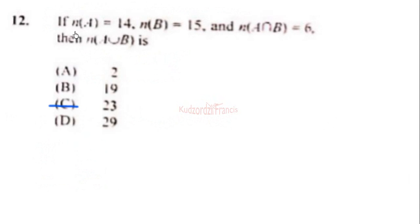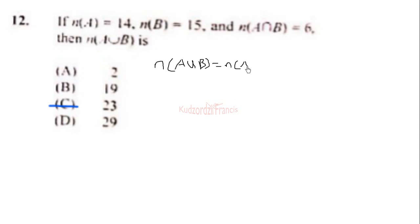Question 12: If the cardinality of set A is 14 and that of B is 15, and that of A intersection B is 6, then the cardinality of A union B is what? We know that the cardinality of A union B is equal to the cardinality of A plus the cardinality of B minus the cardinality of A intersection B.